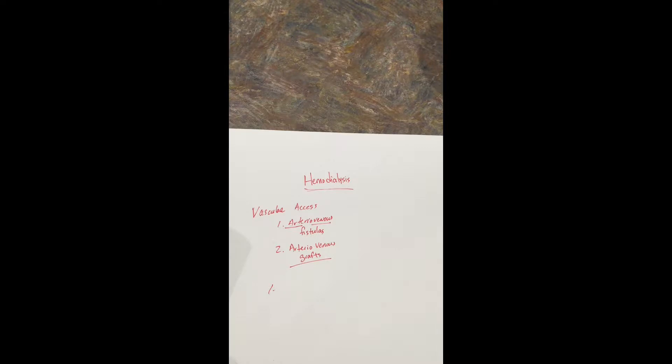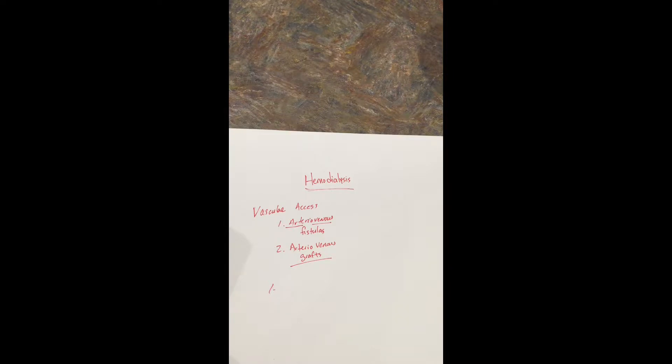In order to perform hemodialysis, you need vascular access first. The two things we're going to focus on are arteriovenous fistulas and arteriovenous grafts. If the patient has an AV fistula, typically this will be in the forearm. To gain access to this AV fistula, two large needles will be inserted — typically 14 to 16 gauge. AV fistulas are preferred because there are fewer complications with AV fistulas.